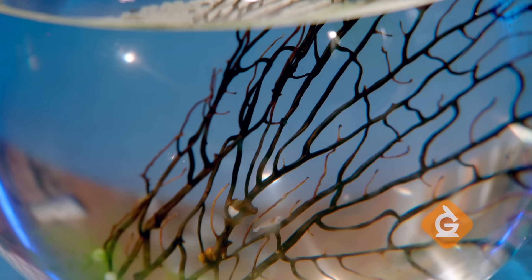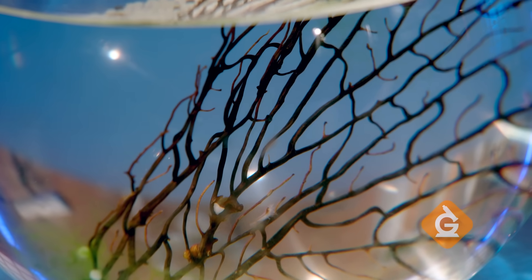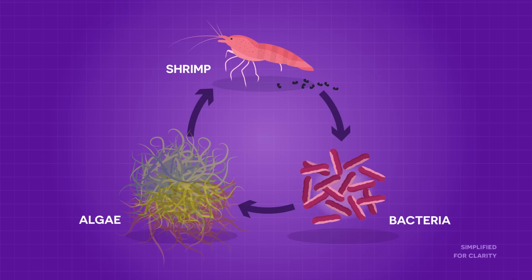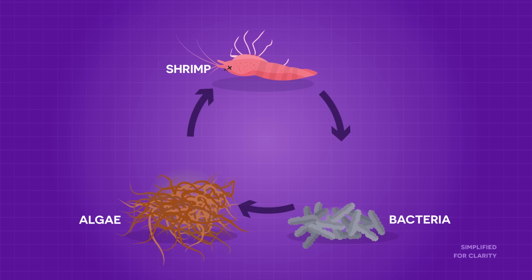However, if the needs of the organisms aren't met, the balance of the ecosystem can be destroyed. For instance, if there was no light, the algae wouldn't grow. That means the shrimp would die since they wouldn't have any algae to eat. And if the shrimp stopped pooping, the bacteria die too. So everything in an ecosystem interacts and depends on each other for survival.